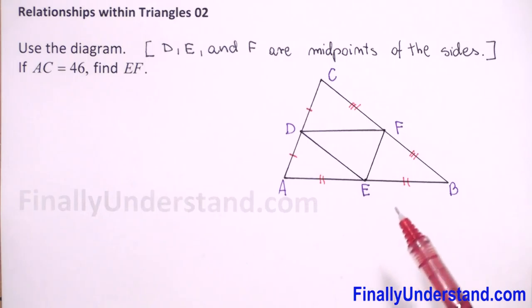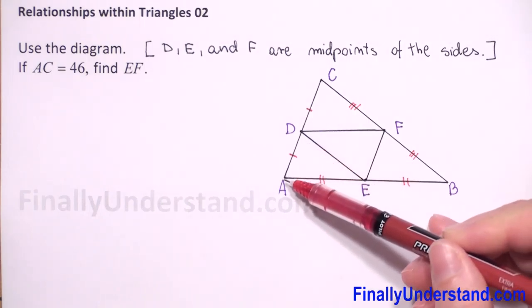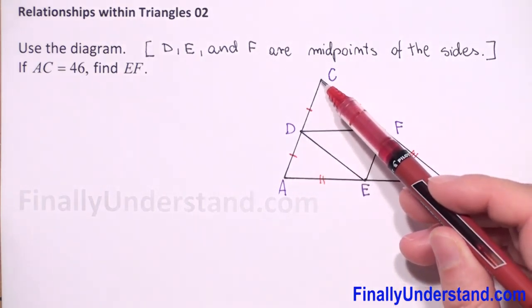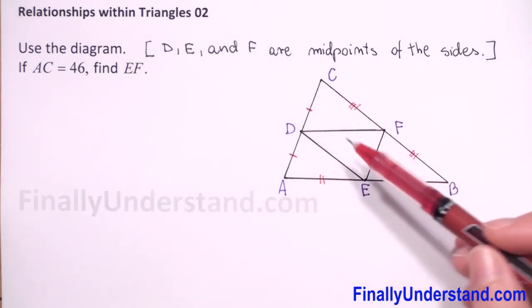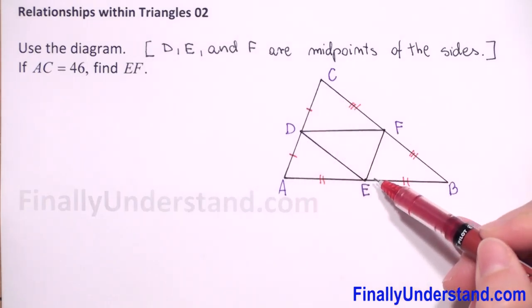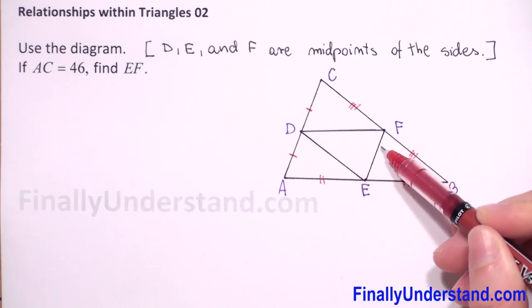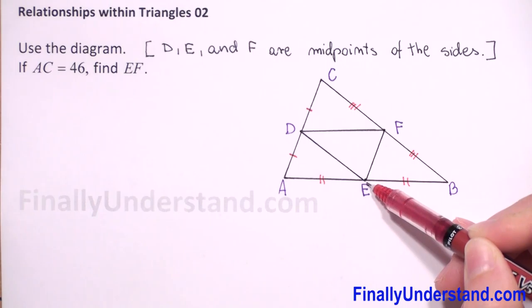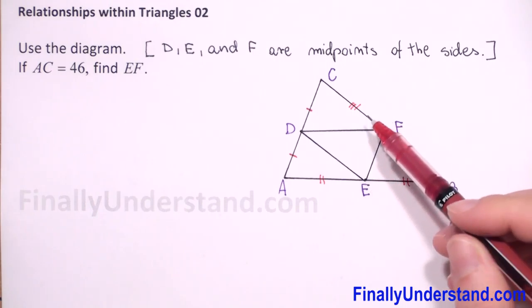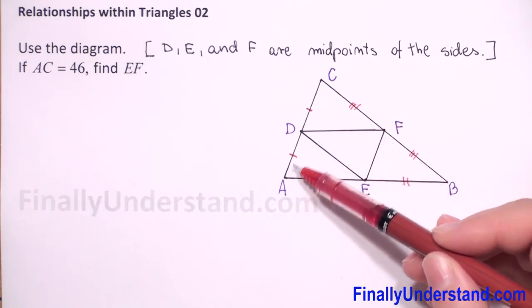So if we have given that AC is 46, AC is parallel to EF by midsegment theorem and is equal to one half of AC.